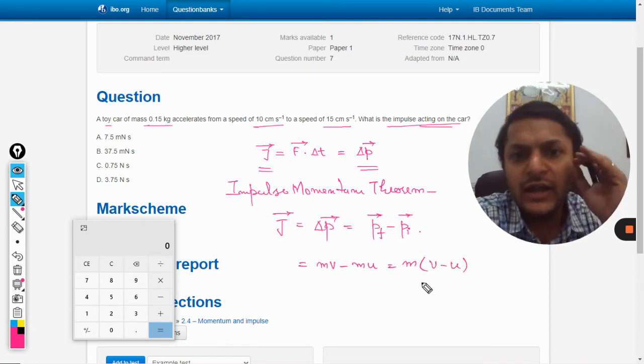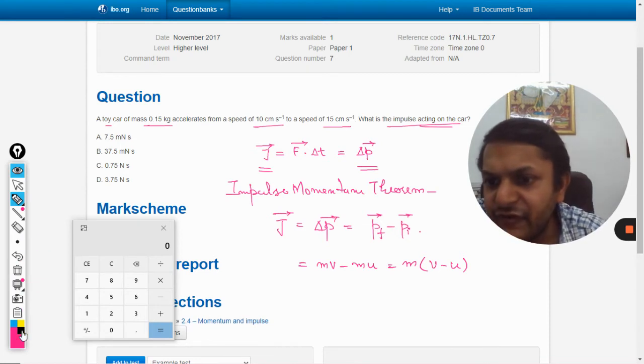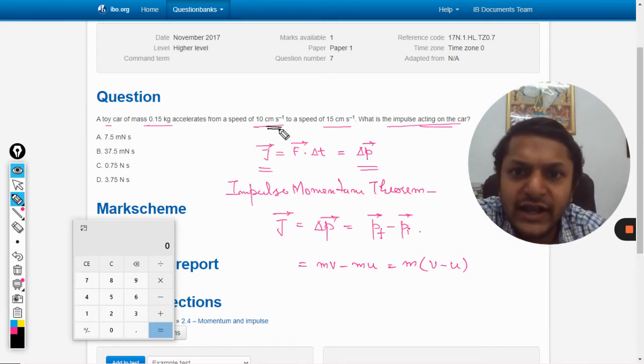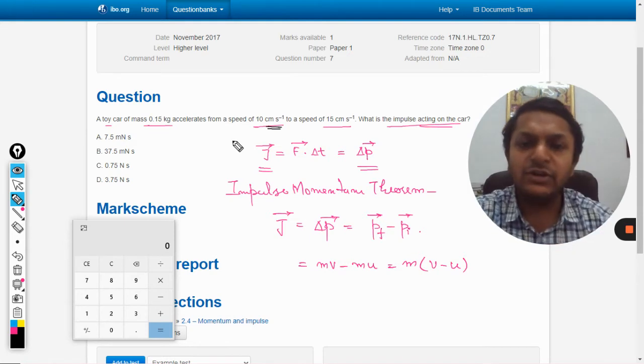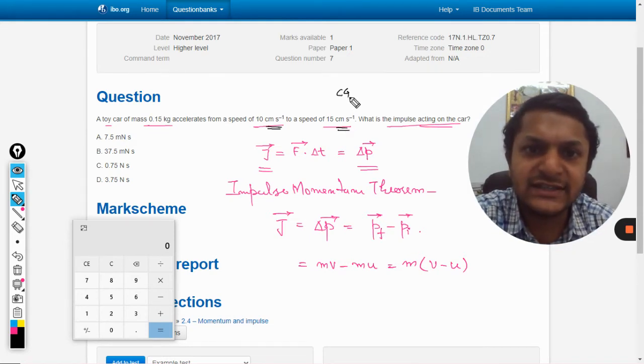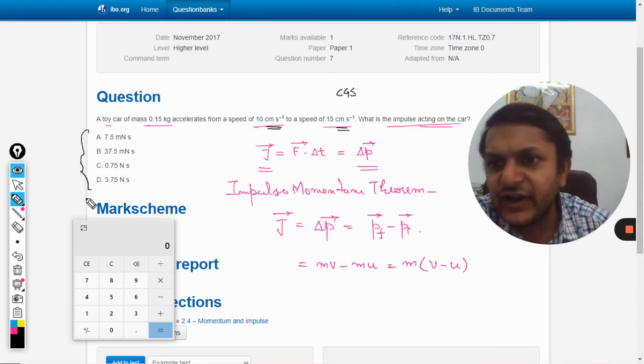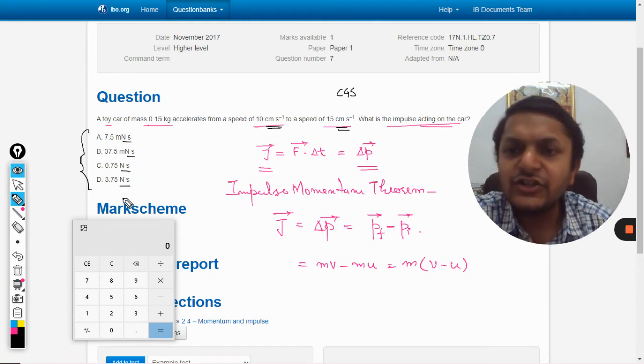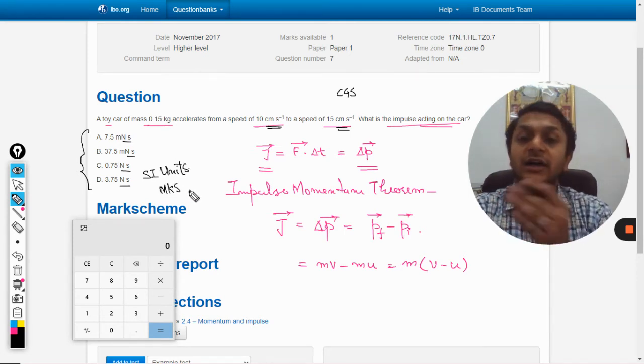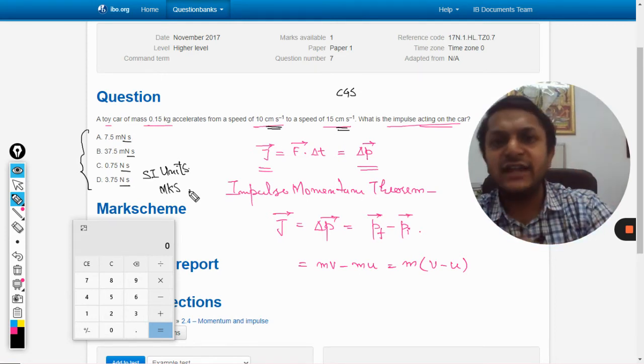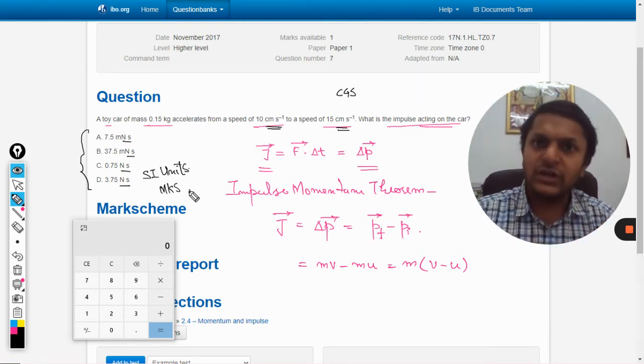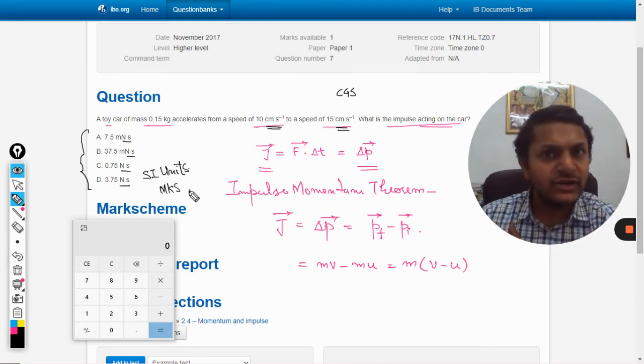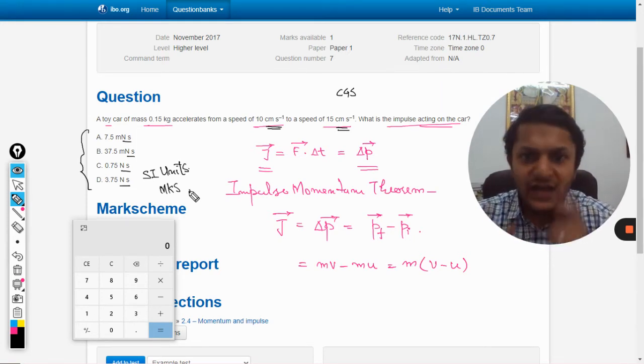Now there is a problem. If we verify here, the units are not right. The unit is given in centimeter, so this is CGS system. But if I verify these options, all of them have the unit newton second, so they are talking in terms of SI units, which is MKS system. MKS is meter, kilo, second, and CGS is centimeter, gram, second. These are two different systems of units we have done in unit and dimension chapter, so we have to convert these things first.